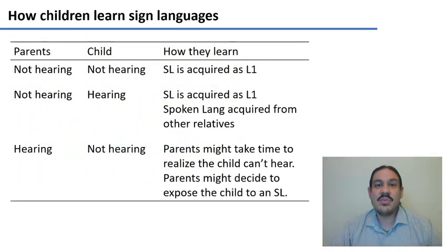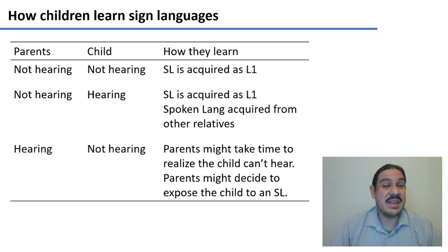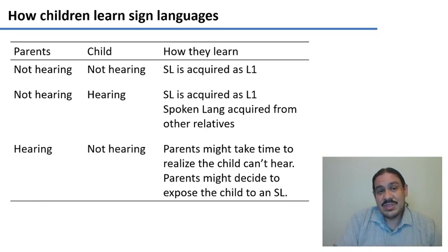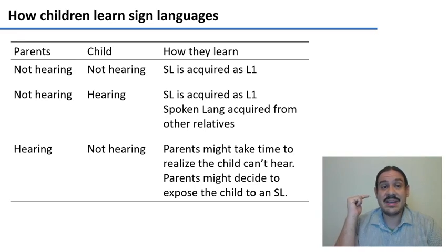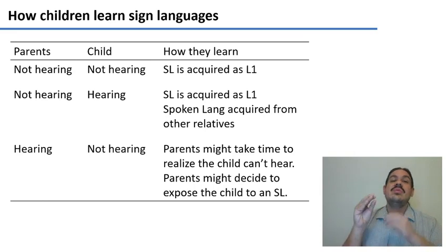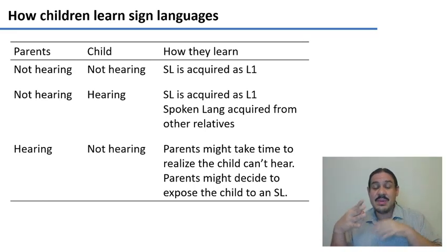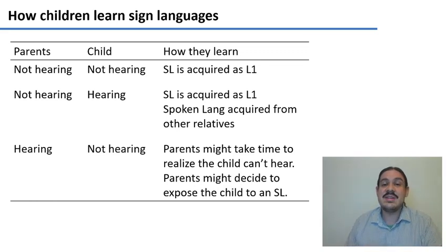But in most societies, the prevalence of children born with hearing loss is about 0.1%. If you think about it, how can children learn sign languages? There are a couple of combinations. For example, maybe the parents are part of the deaf community and use a language like ASL, and the children are born without hearing. In that case, the sign language is transmitted naturally from day one, as the child's L1 or native language.